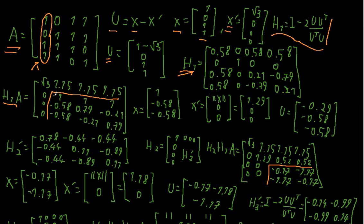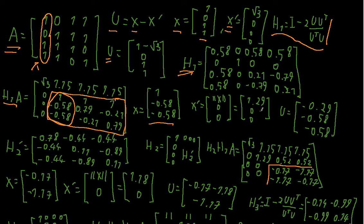Now I will only consider the 3×3 submatrix. The first column vector of this submatrix is my new x = (1, −0.58, −0.58). x prime has its first component equal to the norm of that vector — the square root of 1² + (−0.58)² + (−0.58)², which gives 1.29 — and all other components are 0.